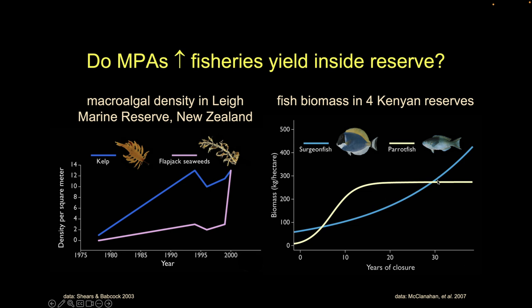The reserves all produced more fish or more organisms, but with different patterns. Some showed a pretty consistent increase over time. But in one case — this flapjack species — it didn't increase much for a long time, then hit some critical threshold and increased rapidly.